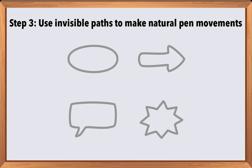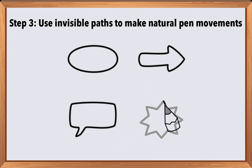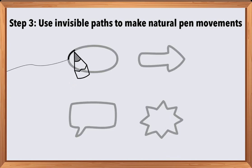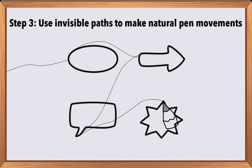If you remember, the original animation with these connector paths hidden looked like this. Now let me draw back the curtain and show you the same animation with the invisible paths showing. As you can see, I've used the same motion path techniques as before, but this time instead of drawing a line, the invisible paths are being used to animate the pencil icon in a curved or more natural way.